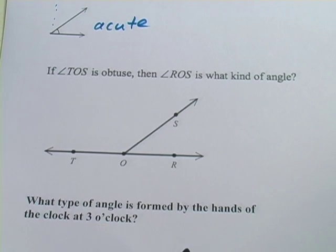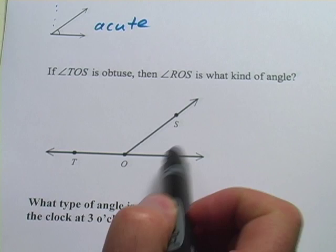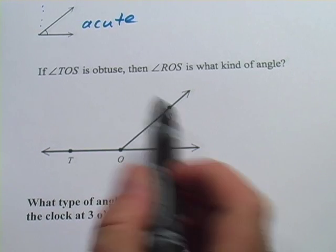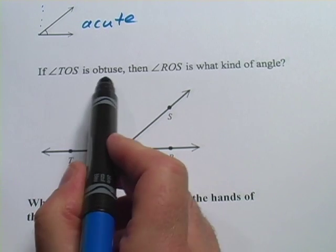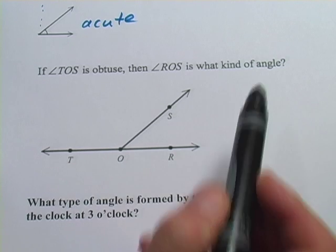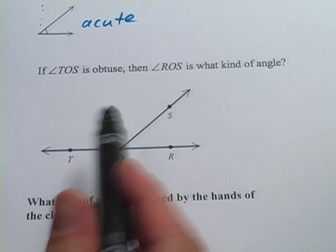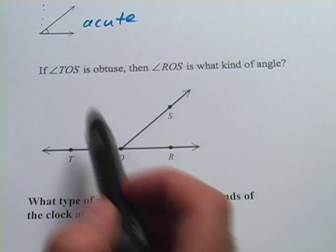And we've got two more here. In this problem, it says if TOS, angle TOS is obtuse, then angle ROS is what kind of angle? And we need to do some sorting out here. What is angle TOS?